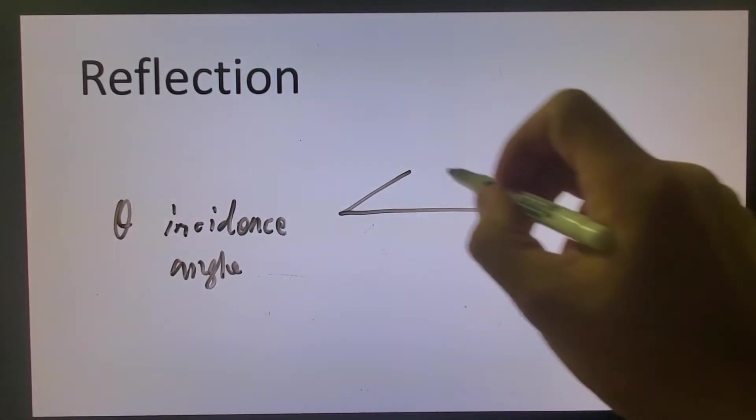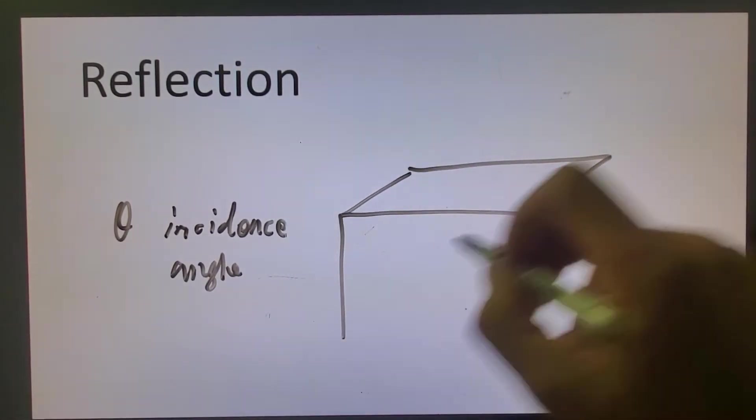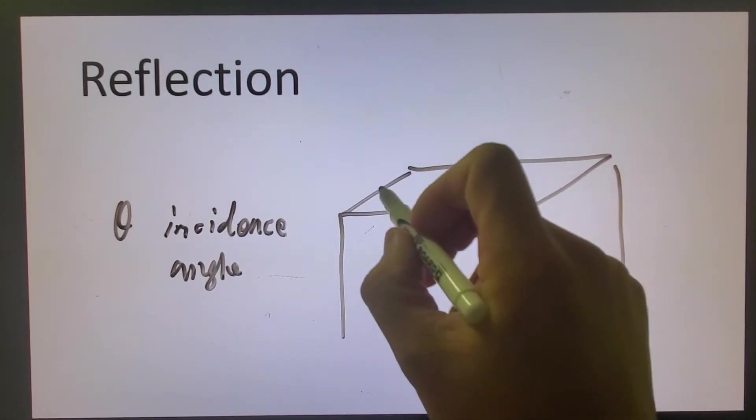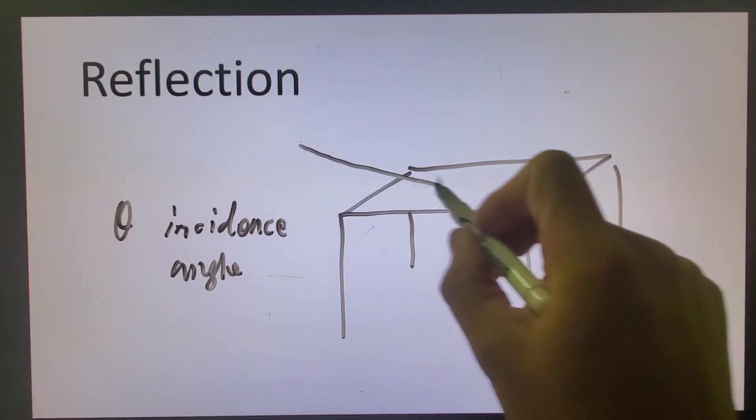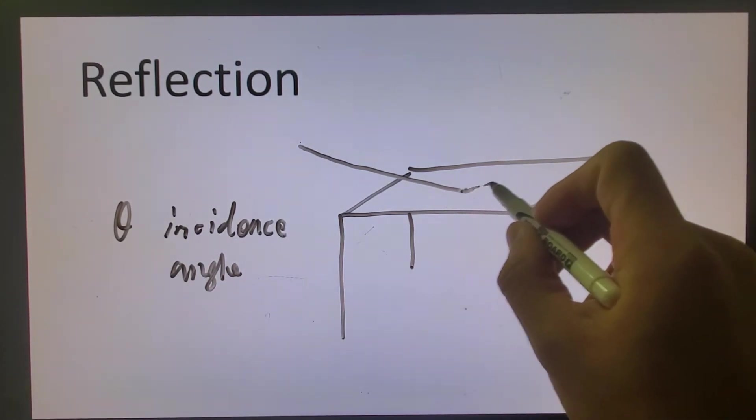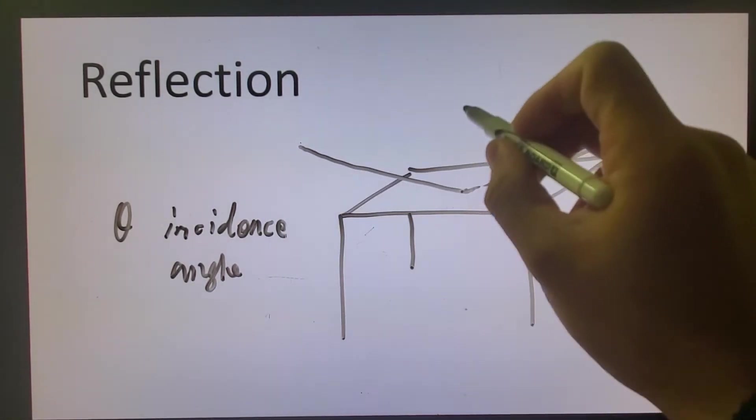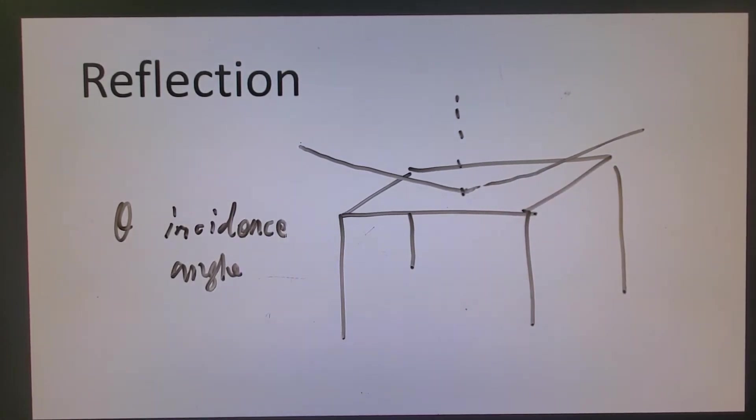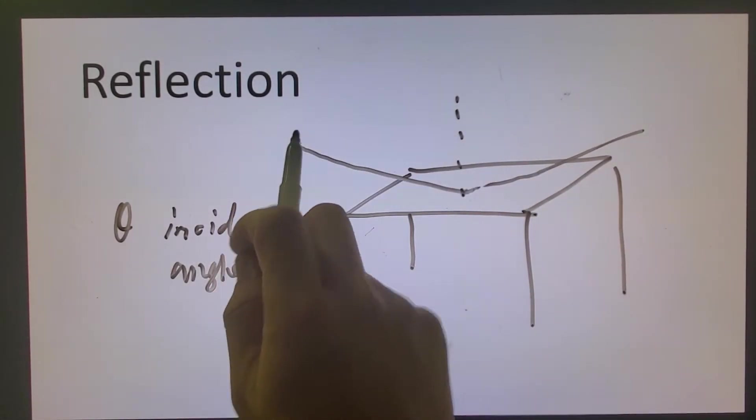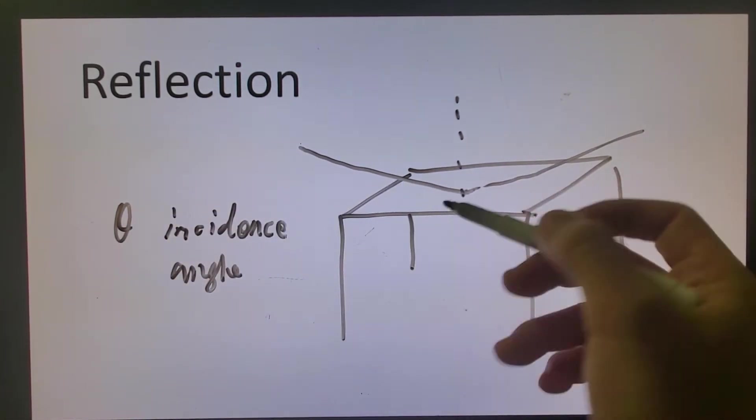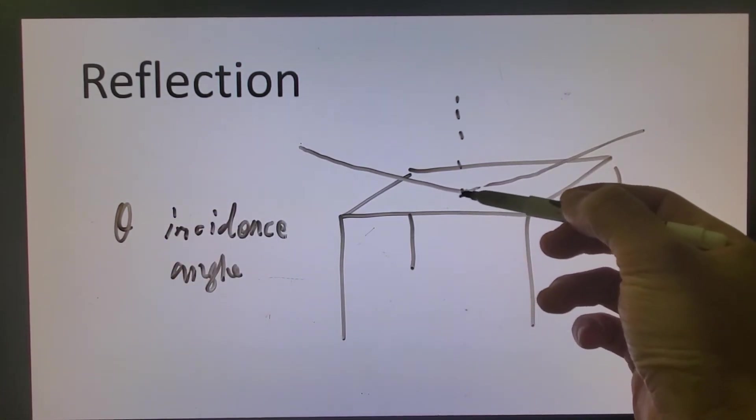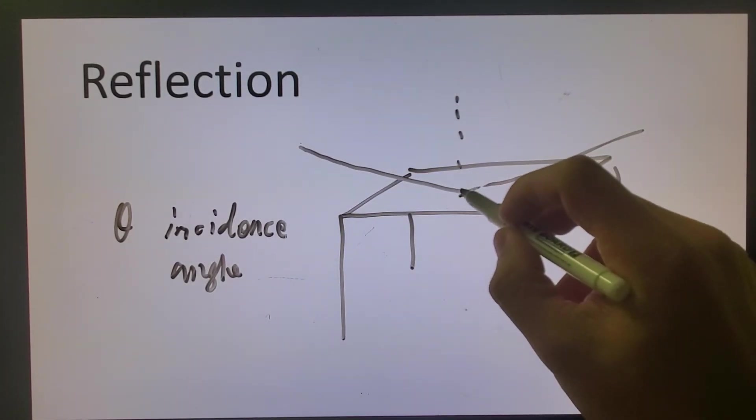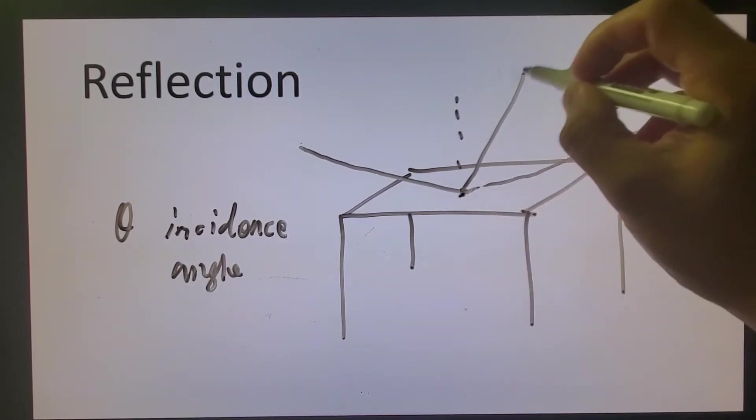So I have a table over here, for example. If I have a beam coming out from here and reflect it out, so the normal is over here. These three lines should be in the same plane. When you have a beam coming from this side, it cannot be reflected out and come to us here, come to our eyes, or it cannot reflect to the other side of the table.